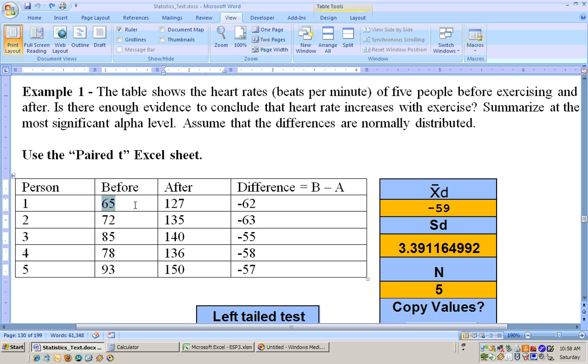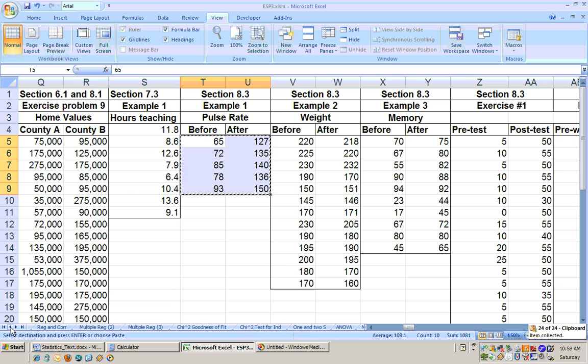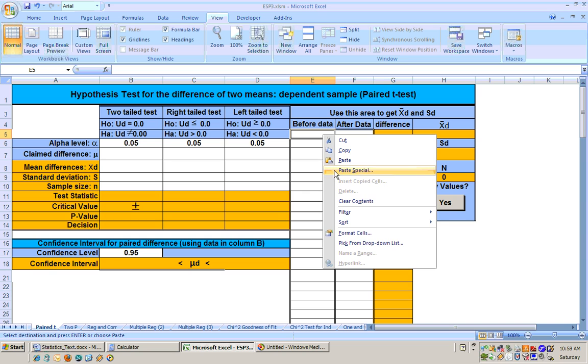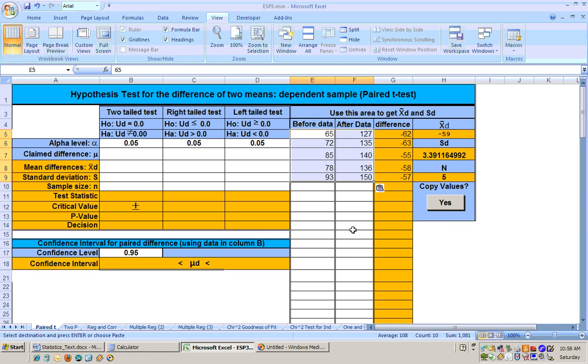All you need to do is highlight this data. Actually go to your Excel sheet and go to the data sheet so you can highlight the data. Right here, we're pulse rate before and after. Copy that data and go to your paired t-test. And that would be right here, your paired t-test. And right here, we want to paste special as values and say okay.